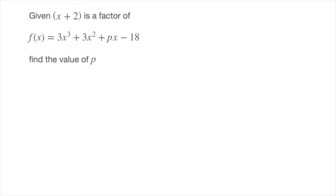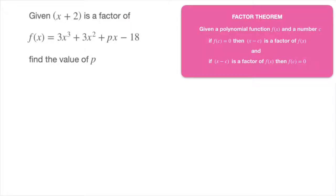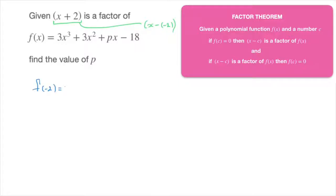The reasoning here is identical to what we've just seen. We're told that x plus 2 is a factor of this polynomial. The factor theorem therefore allows us to state that negative 2 must be one of this polynomial's zeros. If you're unsure of why it's negative 2 and not just 2, the trick is to always look at the operation between the x and the number as a subtraction — think of x plus 2 as x minus negative 2. That highlights that we're dealing with negative 2 here.